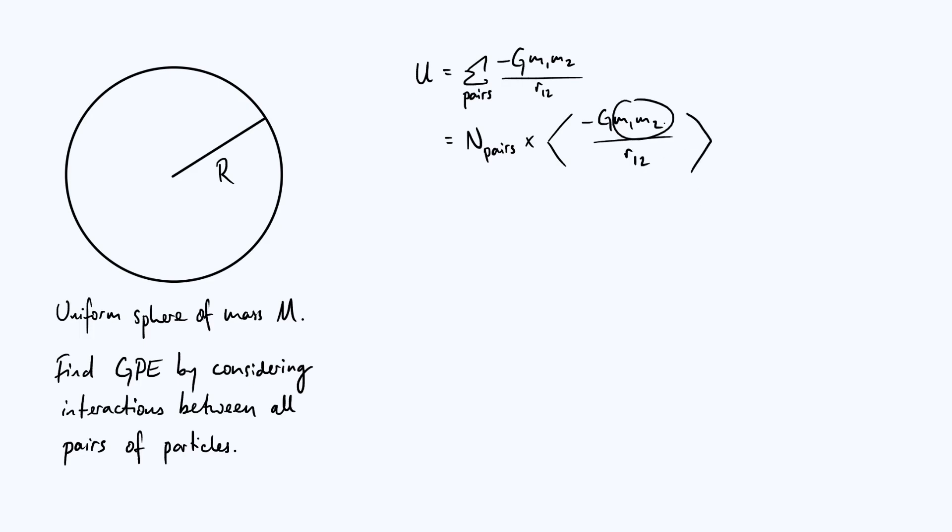So what can we say about m1 and m2? Well, let's say we are going to split our distribution up into a total of capital N particles or capital N elements. Note by the way that this N is not the same as the number of pairs. We'll talk about the relationship between those two things later on. But because it's a uniform distribution, if we split it up, then each individual element, so both m1 and m2, is going to have a mass equal to the total mass of the distribution capital M divided by the number of particles that we split it up into.